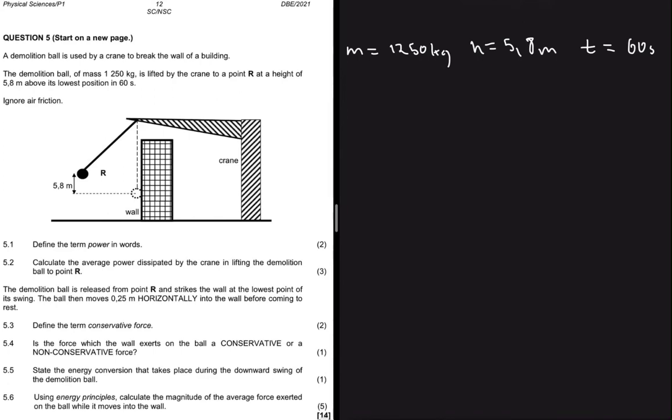The first question, 5.1, says define the term power in words. So power, the formula of power is given as work divided by delta t. So from this formula you can define power as the rate at which work is done.